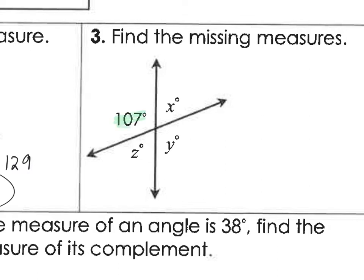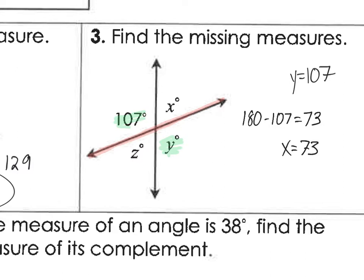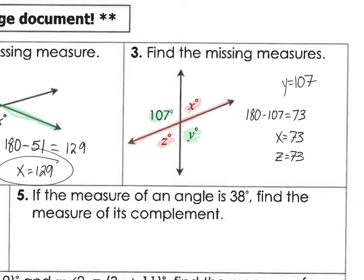This angle and this angle are vertical. Vertical, so they are the same — so y equals 107. How would we find x and z? The line is 180. So 180 minus 107 gives us 73. So if y equals 107, we know that x equals 73. What would z equal? Because they are vertical angles — that and that would be the same.